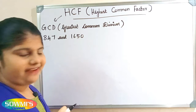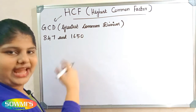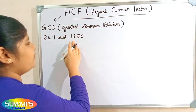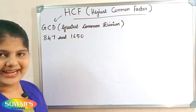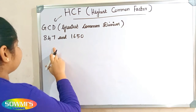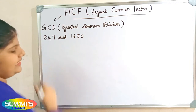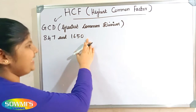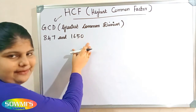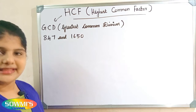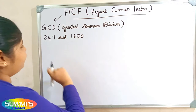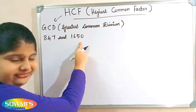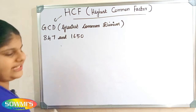First we have to find which is the greatest number and which is the smallest number. Here the greatest number is 1650 and the smallest number is 847. So now we have to divide the greatest number by the smallest number — that is, we have to divide 1650 by 847.